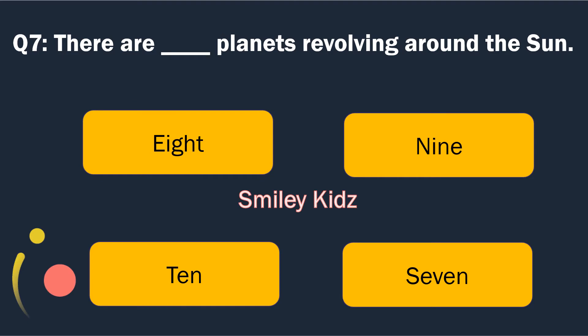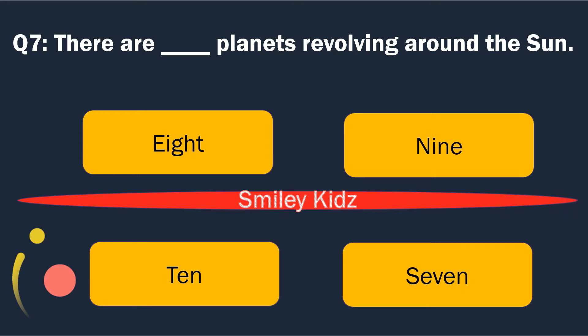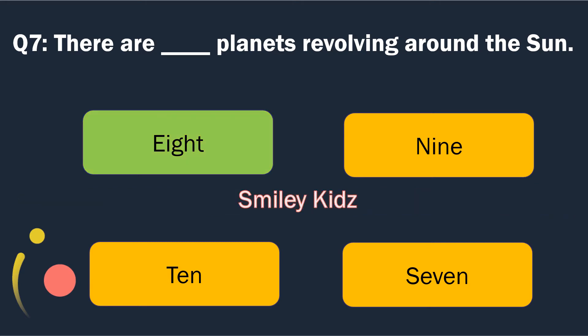Question number 7. There are blank planets revolving around the sun. Options are: 8, 9, 10 and 7. The right answer is 8. There are 8 planets revolving around the sun.